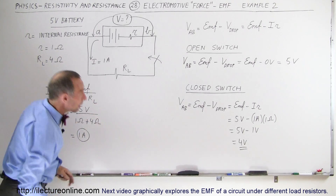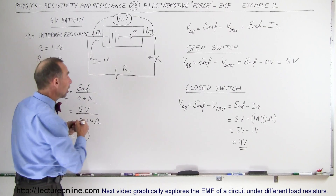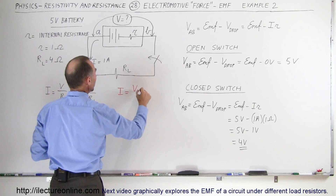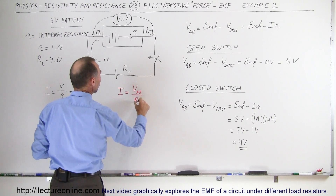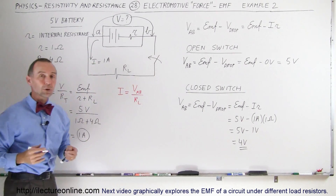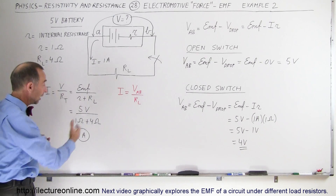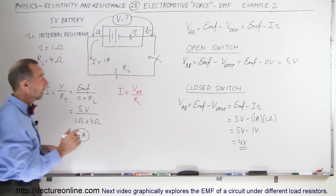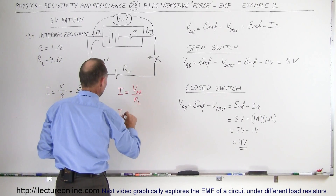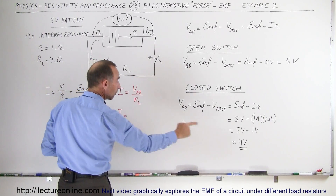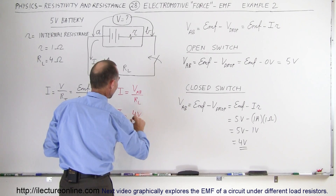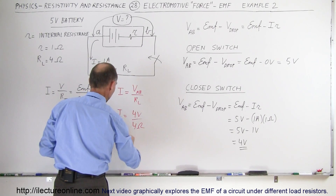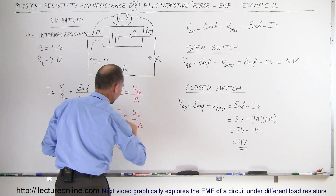Thinking about Ohm's law, if the current equals the voltage from A to B divided by the load resistor, do we get the same 1 amp current? We should, because it acts as if it's a 4-volt battery with an external resistance of 4 ohms. So I equals 4 volts divided by 4 ohms, and either way we get a current of 1 amp.